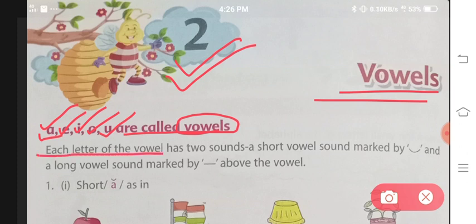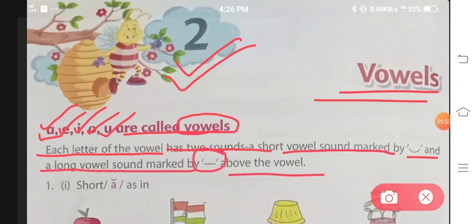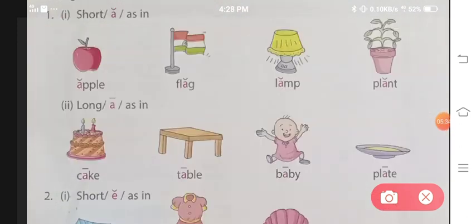Each letter of the vowel has 2 sounds. A short vowel sound marked by this symbol and a long vowel sound marked by this symbol above the vowel. When you pronounce vowels, you will hear two different types of sounds. This symbol indicates short sounds, which we speak softly. And this symbol indicates long vowel sounds, which we pronounce very long.